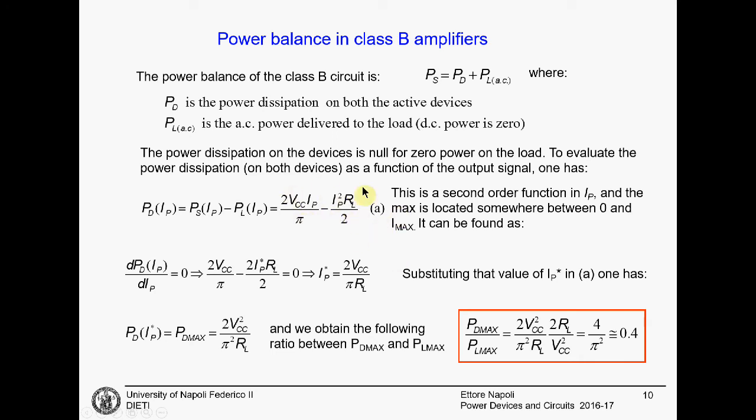Since it is a resistive load, the square of the current multiplied by the resistance divided by two. This is a second-order function in Ip. You can calculate the maximum. We calculate the derivative of this function. And you get this maximum power current. And substitute this in and get the maximum power on the devices. This ratio, PDmax divided by the maximum power on the load is 0.4.